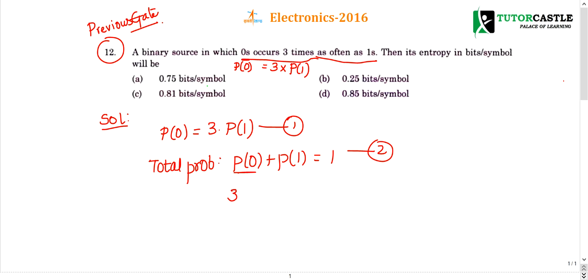Instead of p of zero, I'll write three times p of one plus p of one equals one. This implies four times p of one is one, therefore p of one is one by four. If one is one by four, you can cross check that p of zero will be three by four.